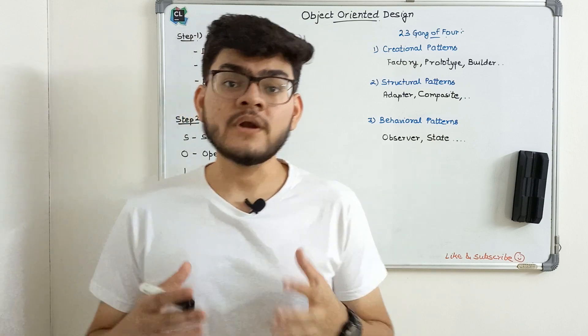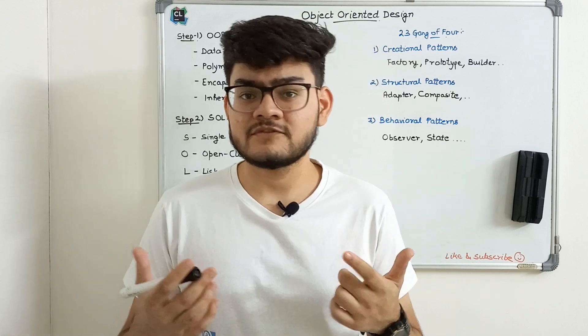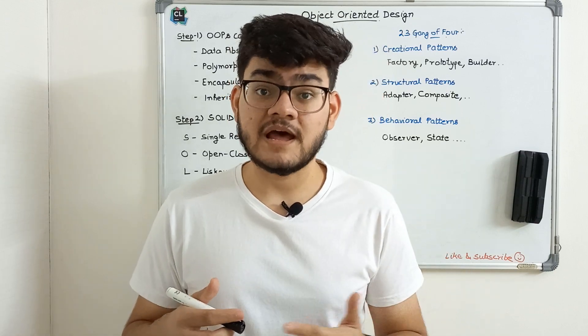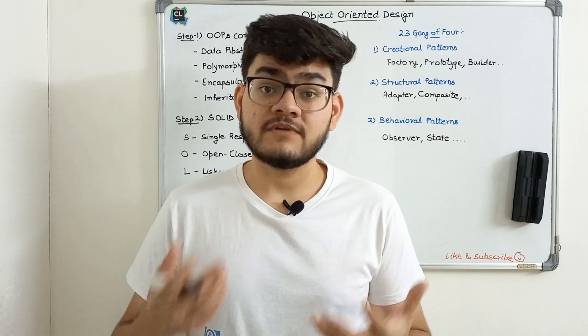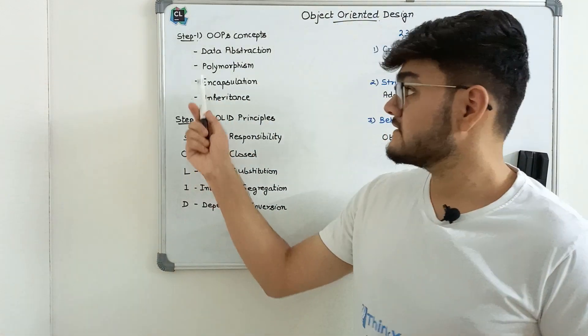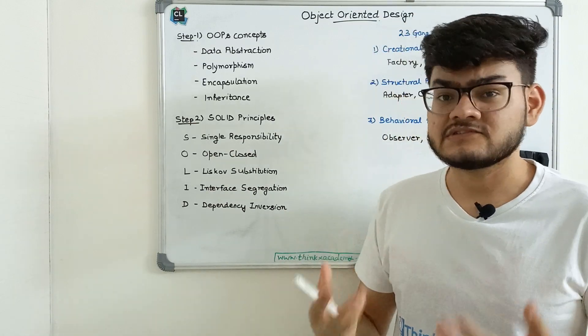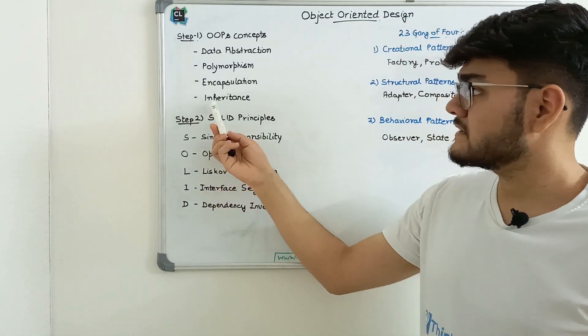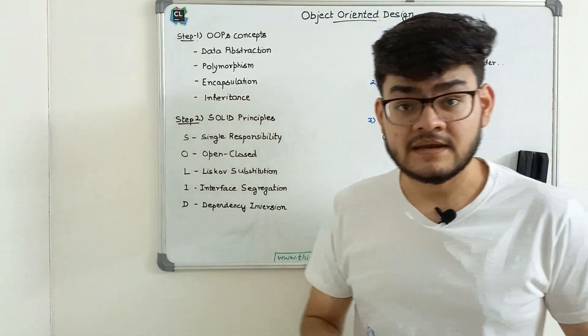Object-oriented design consists of two things: principles and patterns. Principles guide you on how to use OOPs concepts. If you're familiar with object-oriented programming like Java or C++, you might know concepts like data abstraction, polymorphism, encapsulation, and inheritance.